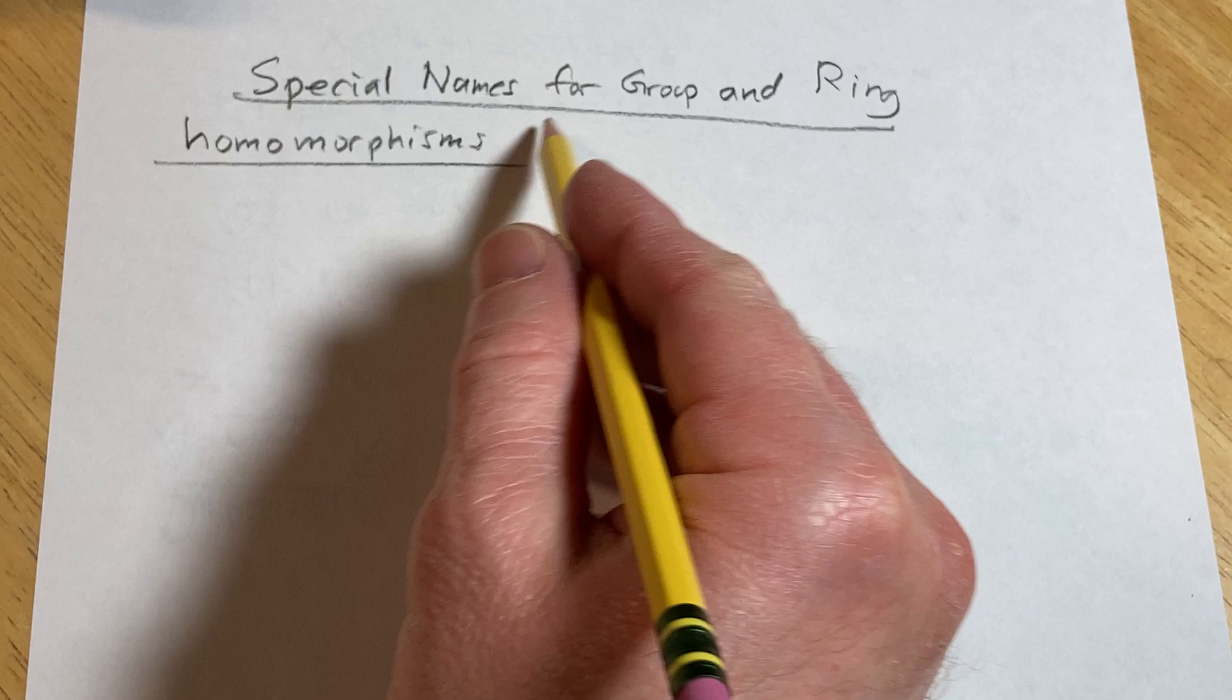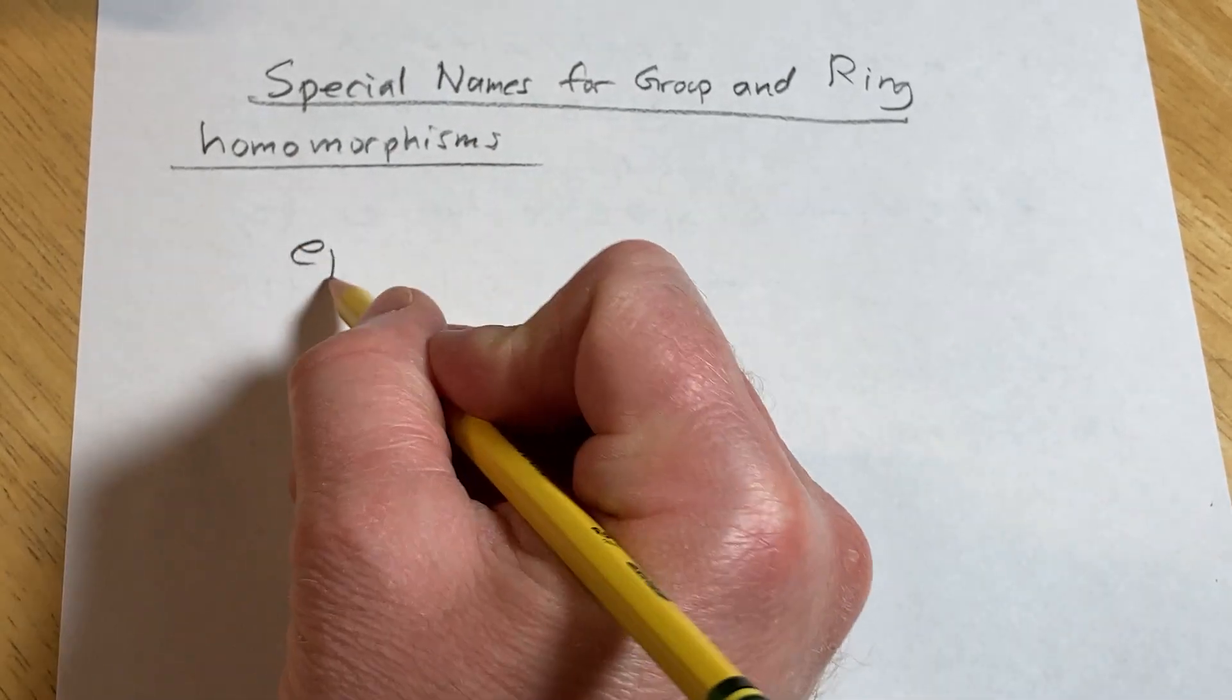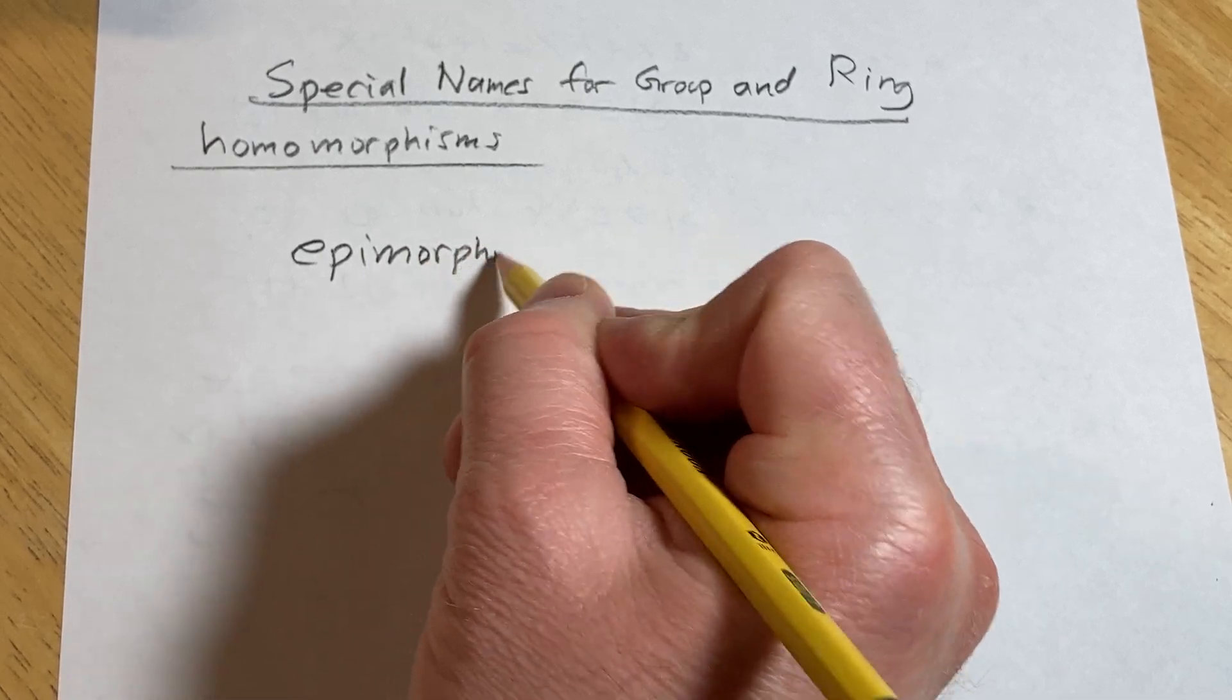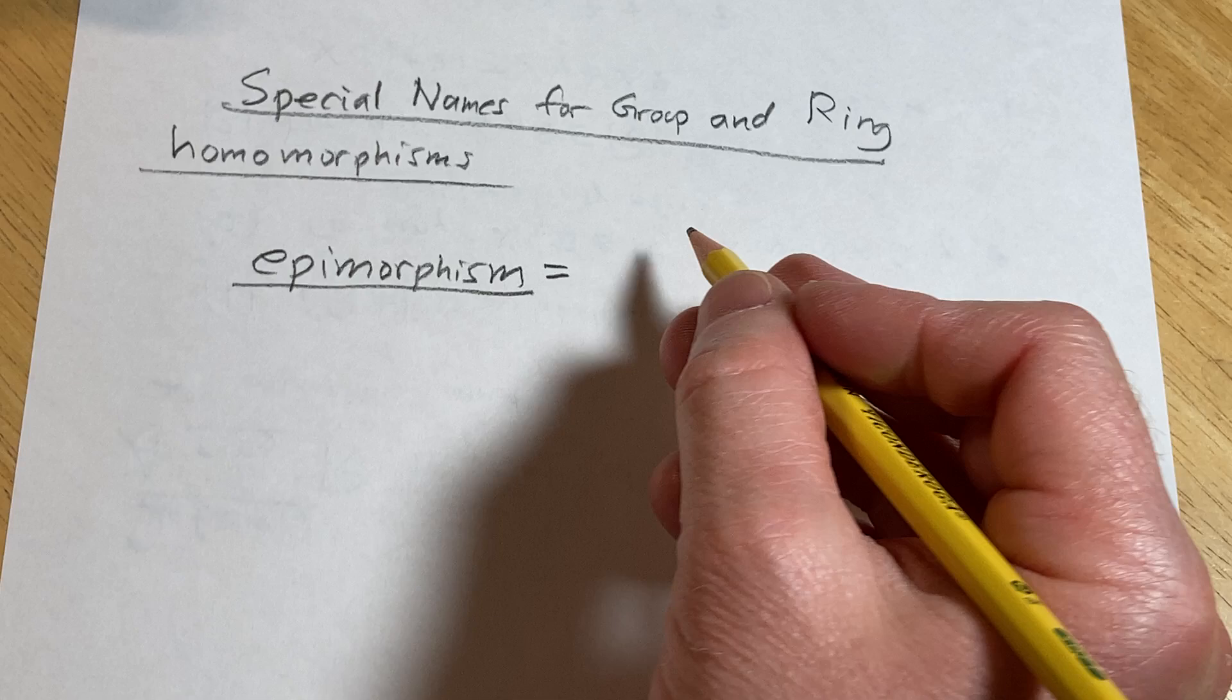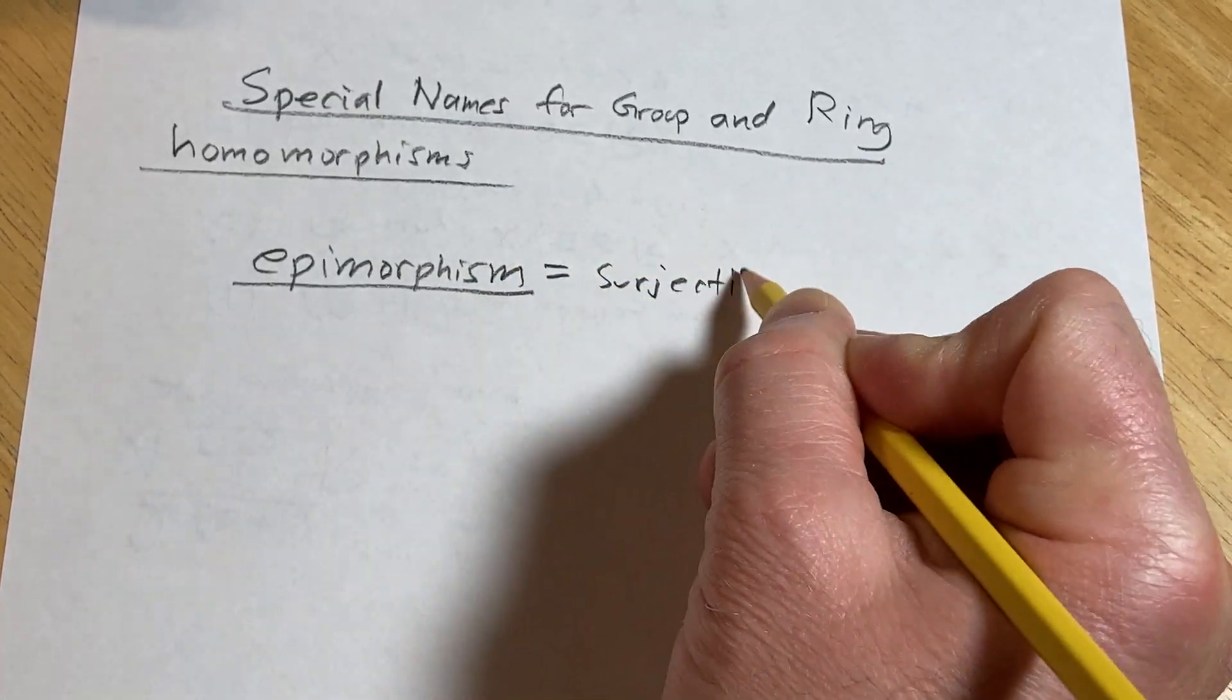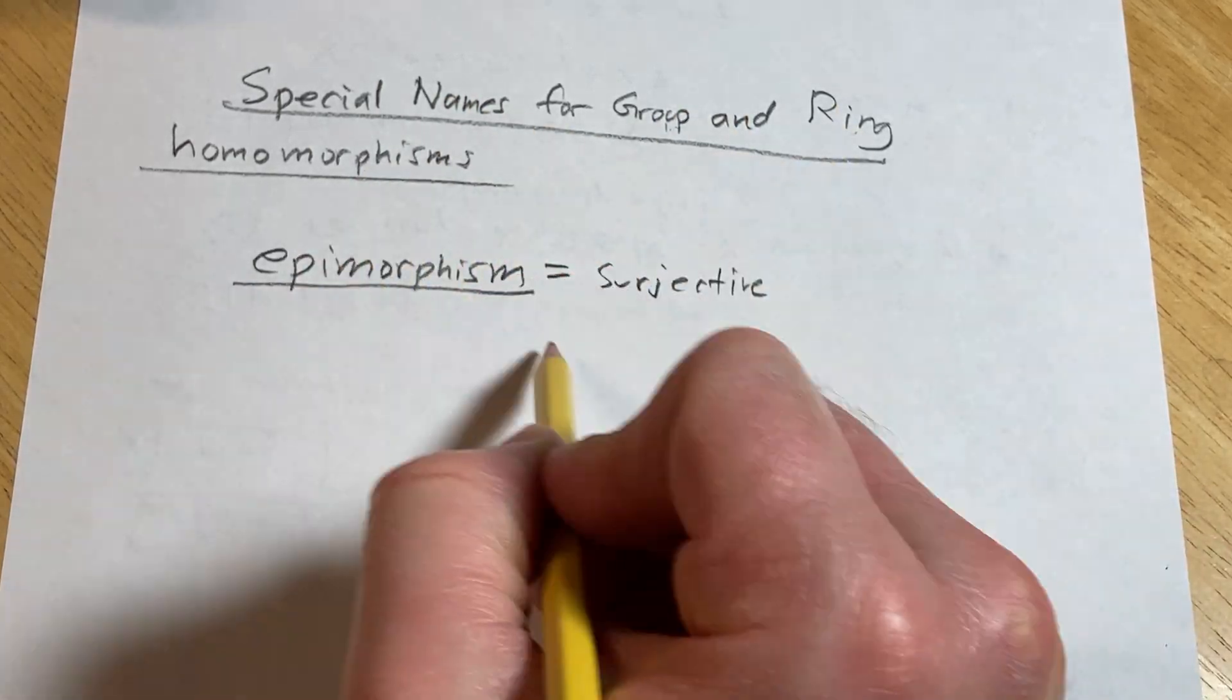So if one of these is surjective, it's called an epimorphism. An epimorphism, this is a surjective group or ring homomorphism. So it means it's surjective, it's a surjective group or ring homomorphism.